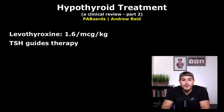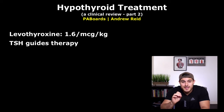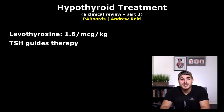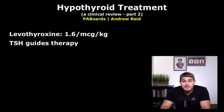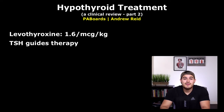About 80% of T4 is absorbed, and levothyroxine has a half-life of about seven days — this is why we can dose it once a day. Remember that synthetic T4, which is levothyroxine, is considered a pro-hormone. It is later converted into T3, which is the active hormone, and this conversion occurs in the peripheral tissues.